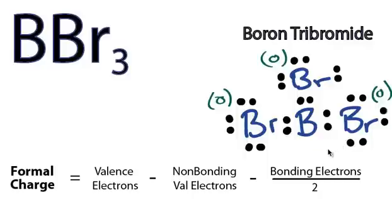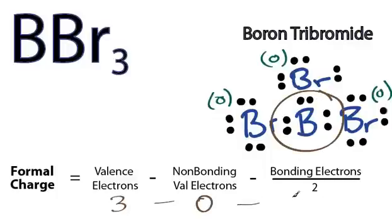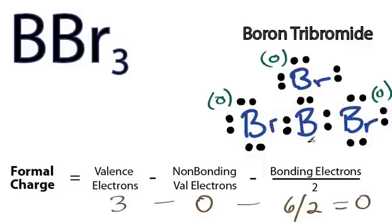Next, let's do the boron. Boron on the periodic table. Group 3 minus non-bonding. They're all in bonds. So 0 minus bonding. We said we have 6. 6 over 2 equals 3 minus 3 is 0. So the formal charge on boron is 0.